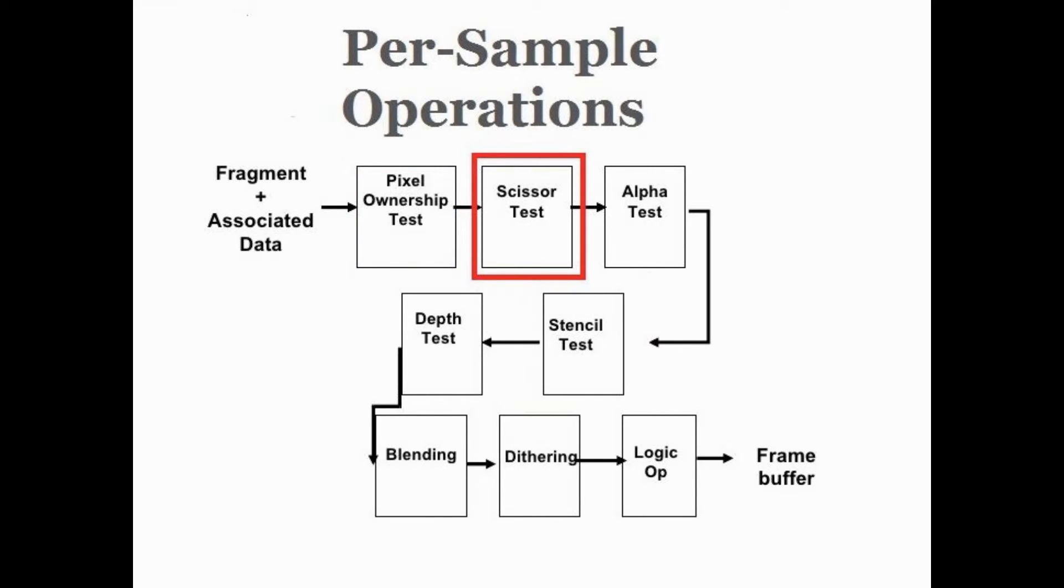Scissor test: when enabled, the test fails if the fragment's pixel lies outside of a specified rectangle of the screen. Stencil test: when enabled, the test fails if the stencil value provided by the test does not compare as the user specifies against the stencil value from the underlying sample in the stencil buffer. Note that the stencil value in the framebuffer can still be modified even if the stencil test fails, and even if the depth test fails.